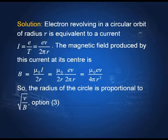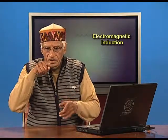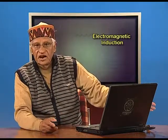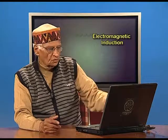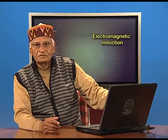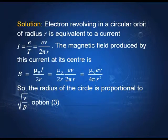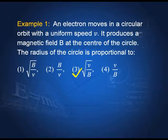The magnetic field produced by this current at the center of the loop is given by B = μ₀i/2r. Substituting the value of i = ev/2πr, we get B = μ₀ev/4πr². From this expression, r is proportional to the square root of v/B, which is option 3.